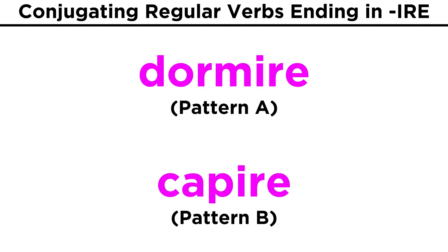Unfortunately, there is no indication in the infinitive as to which group a verb in the third conjugation will belong to, so we simply have to memorize them. Again, these become easy to remember with more repetition, but let's go through some common verbs from each group now.